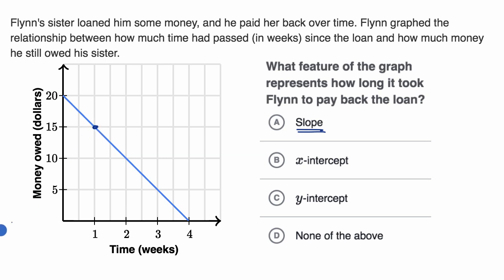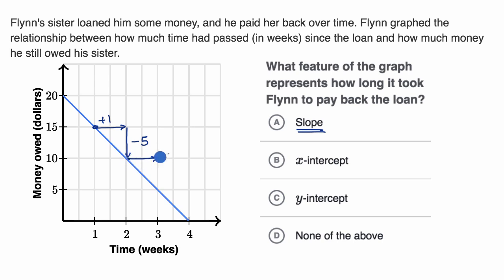For example, if we start from here, we can see that if one week goes by — from one week to two weeks — our loan went down from $15 to $10. So when we had plus one week in time, our loan went down by $5. That happens over the next week too, and that rate of how quickly the loan is paid is what the slope tells us.